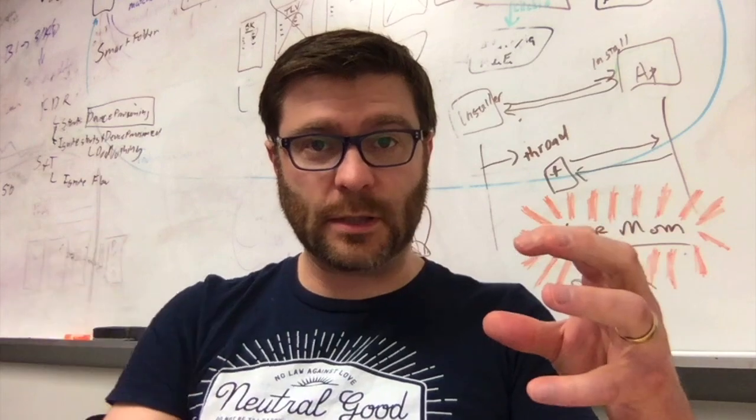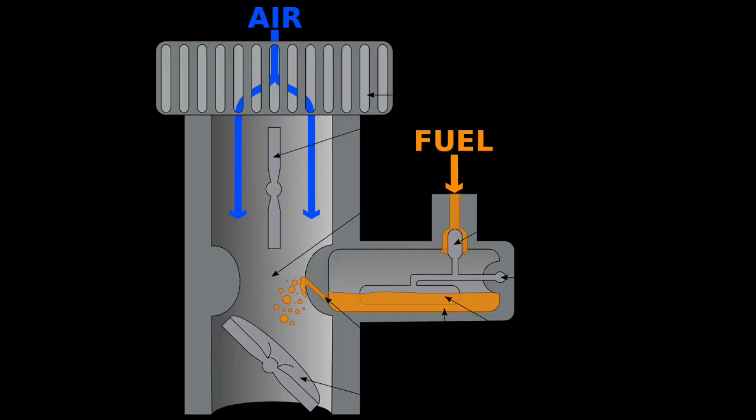It's a tube of air with a little tube of fuel sticking into it. As the air passes through, it pulls some of the fuel with it and pushes that into the explosion chamber.